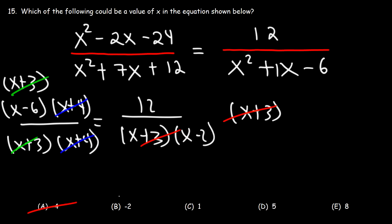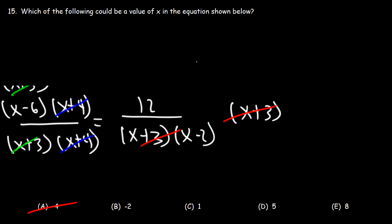So what we have left over, which I'm going to write at the top, we have x minus 6 on the left side. And on the right side, we have 12 over x minus 2.